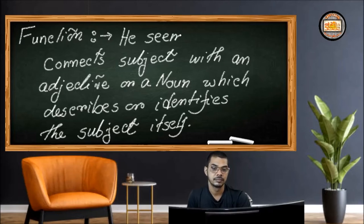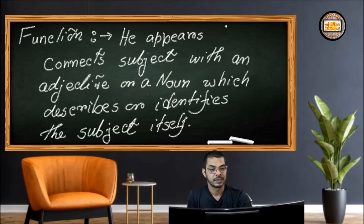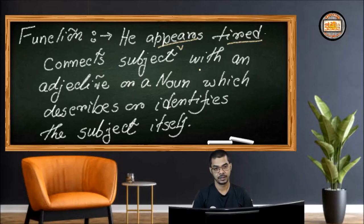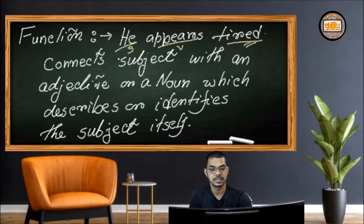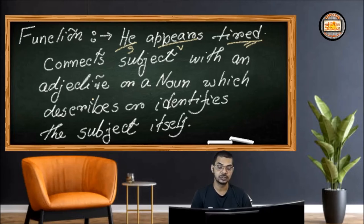Let me take another example: 'He appears tired.' Here we have an example with an adjective. In this sentence, 'tired' is the description of the subject 'he.' 'Tired' describes 'he,' and 'appears' is the verb which makes a connection between 'he' and 'tired.' These two components are connected by 'appears,' the verb. That's why 'appears' in this sentence is considered a linking verb.